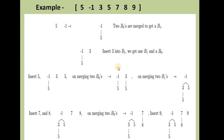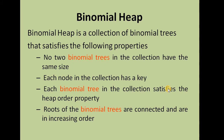We insert 8 as another B0 and combine these two B0s into a new B1. The next element 9 is inserted as a B0. These elements cannot all be joined because they are of different heights: B0, B1, and B2. This is how we construct the binomial tree structure.